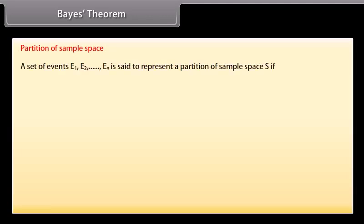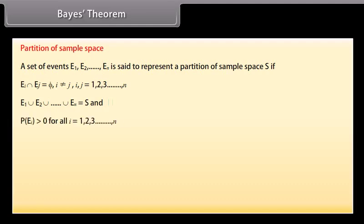Bayes' Theorem. Partition of Sample Space: The set of events E1, E2, ..., En is said to represent a partition of sample space S if: Ei ∩ Ej = null set for i ≠ j; E1 ∪ E2 ∪ ... ∪ En = S; and P(Ei) > 0 for all i = 1, 2, ..., n. Theorem of Total Probability: Let E1, E2, ..., En be a partition of the sample space S, and suppose each event has non-zero probability.